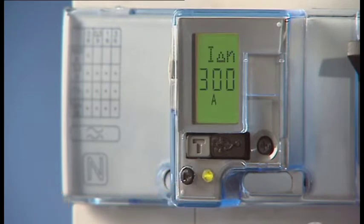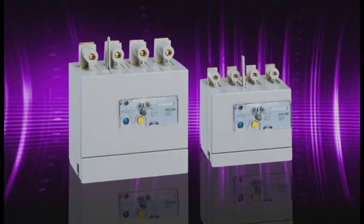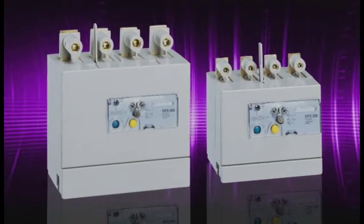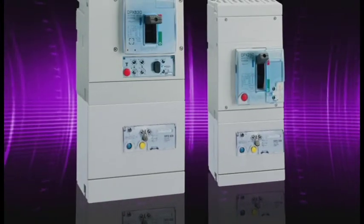The DPX Cubed MCCBs with integrated earth leakage protection allow the setting of current values and time delay for tripping. The DPX 250 and DPX 630 ranges need to be equipped with a corresponding earth leakage module in order to ensure protection against residual currents.